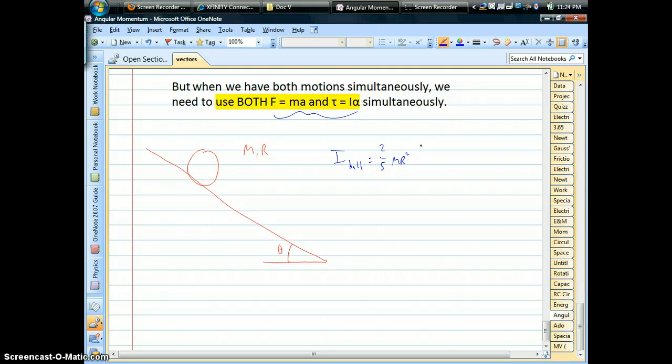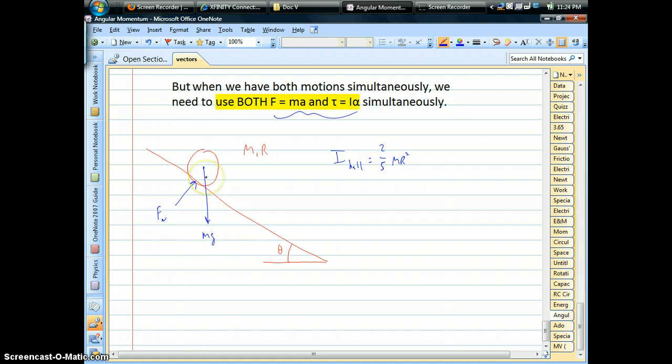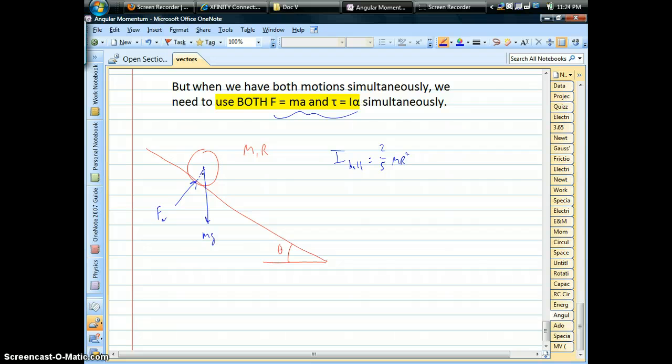We need a force diagram. Okay, well acting on the center of mass, of course, is gravity. We have a normal force. And then the fact that we're told that it's rolling means there's got to be a torque. Gravity, normal force, they can't produce torques. Gravity's acting on the center of mass, it can't produce torque. The normal force is parallel to the radius line there. Okay, remember that the center of the ball is the axis of rotation. Okay, so that can't produce torque.